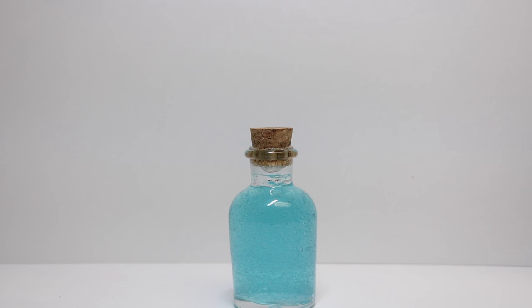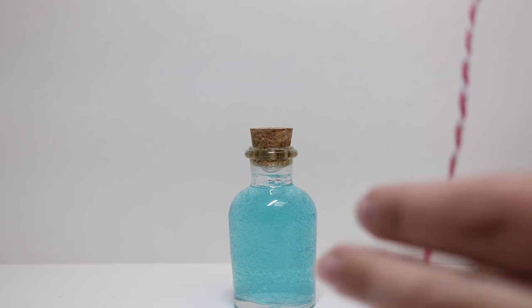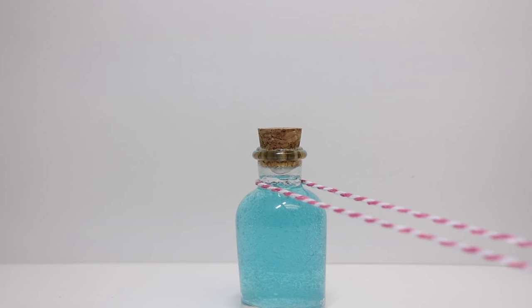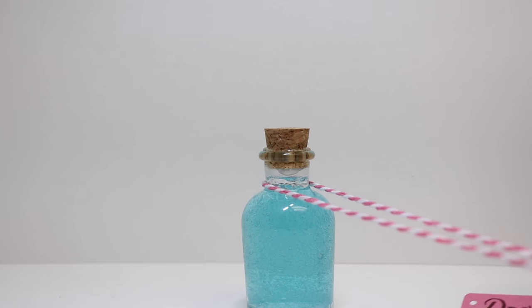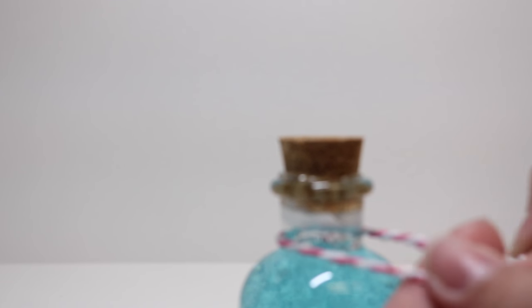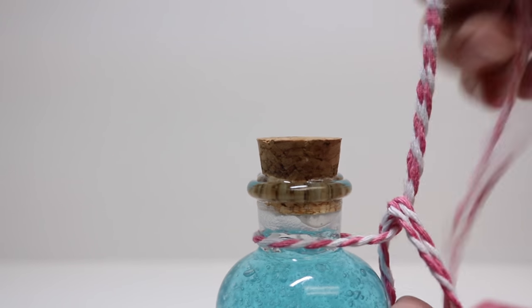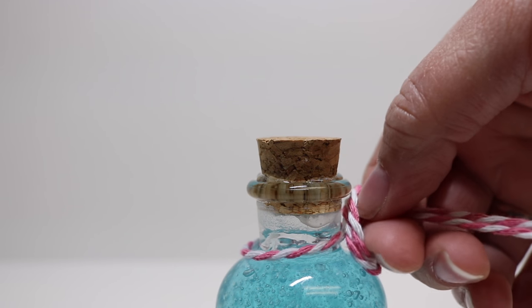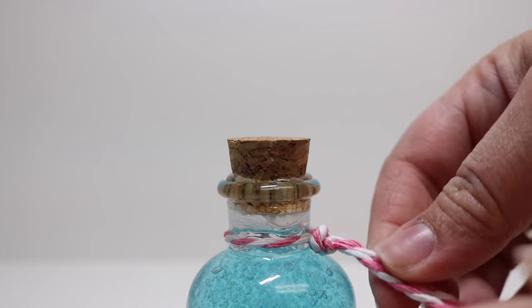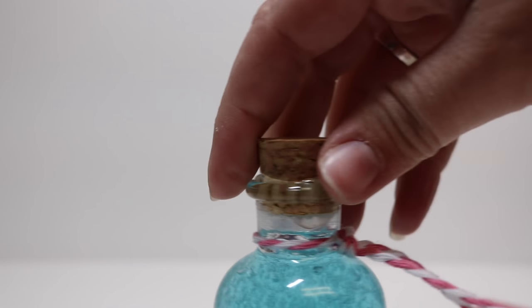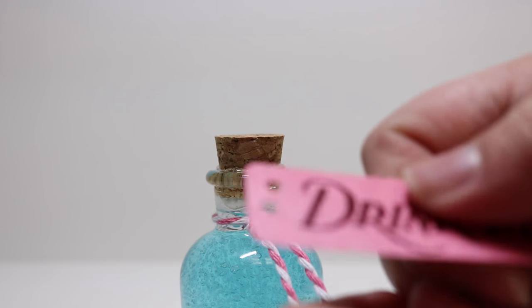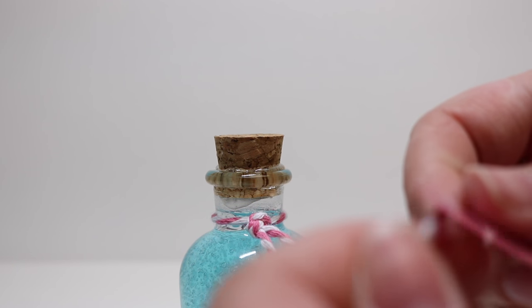Okay, so once we have sealed our cork on, then we're going to take some of our string or twine. I decided to do a pink and white string just because I thought it would give a very nice Alice in Wonderland feel and it matches the tag very nicely as you can see. So we're just going to take the string and we are going to just do an overhand knot to seal it close to the bottle. Once we have tied it close to the bottle, then we are going to take the strings and we are going to feed them through the holes in our tag.